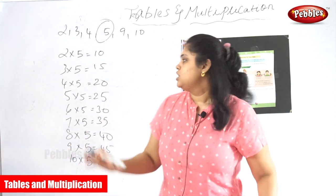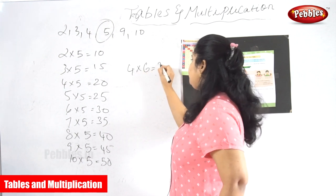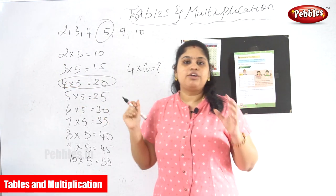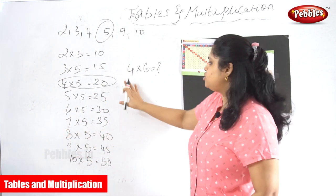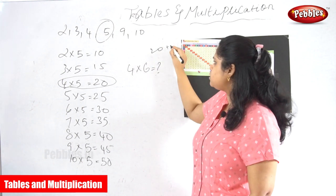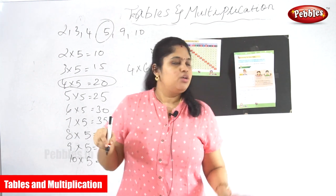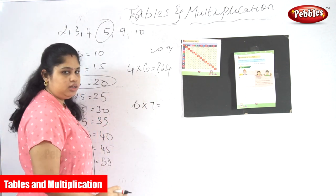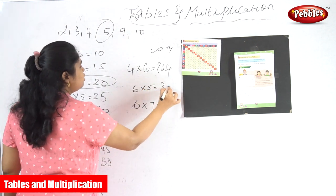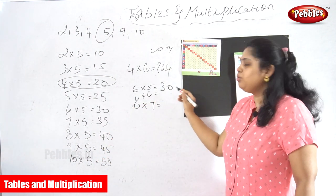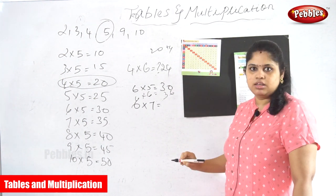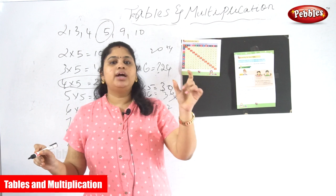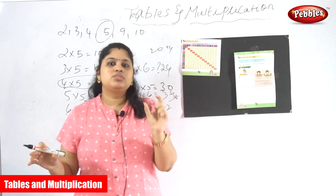So this is the 5 table. For example, if I don't know 4 into 6 and I forget it, I can just take 4 into 5, which is 20. Then add 4, and 6 into 4 is equal to 24. Similarly, if you forget 6 into 7 — you already know 6 into 5 is 30, then 6 into 6 is 36, add 6 again and the answer is 42. So you have to recollect using the 5 tables.